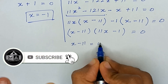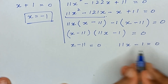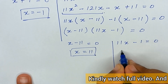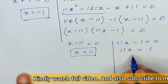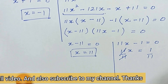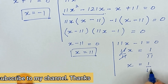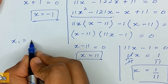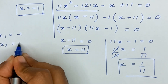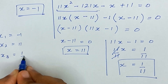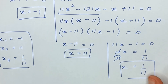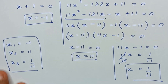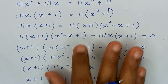So (x − 11) is common, giving (x − 11)(11x − 1) = 0. This gives two cases: x − 11 = 0, so x = 11; and 11x − 1 = 0, so x = 1/11. Therefore we have three values of x: x₁ = −1, x₂ = 11, and x₃ = 1/11. Hope you liked the video — please subscribe to my channel, thank you.